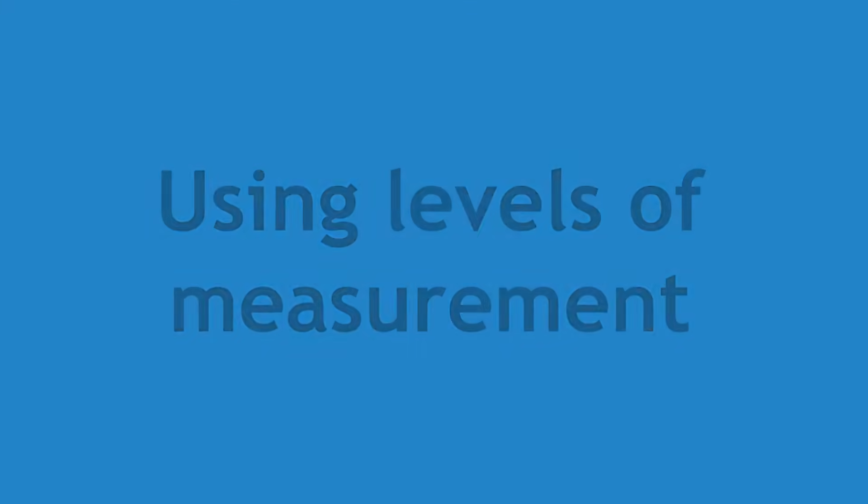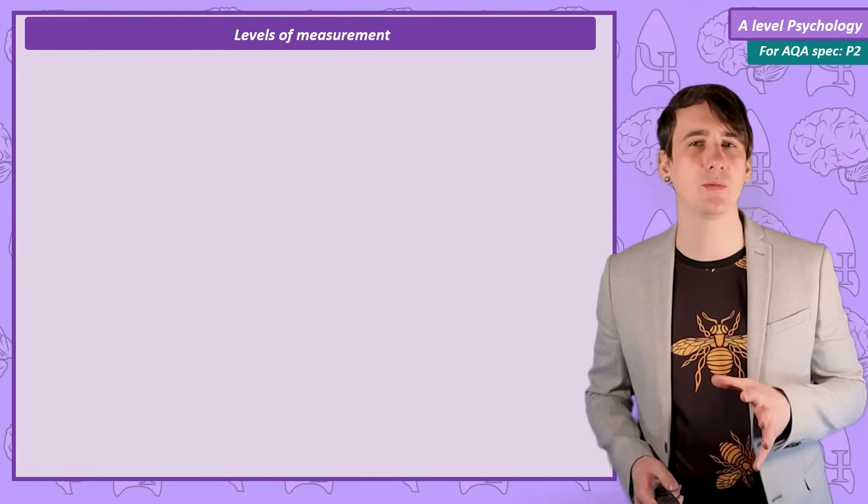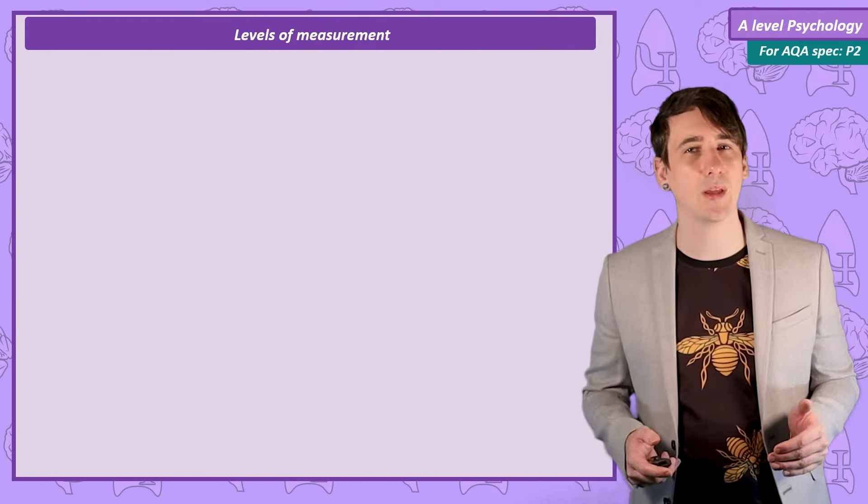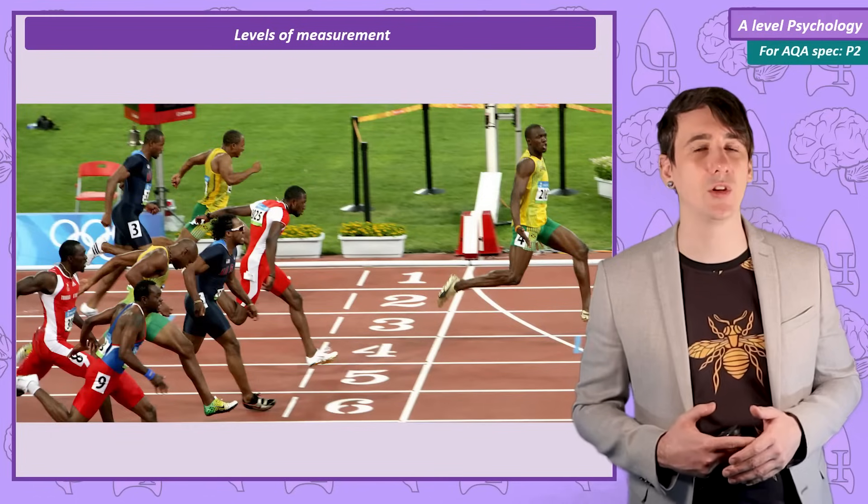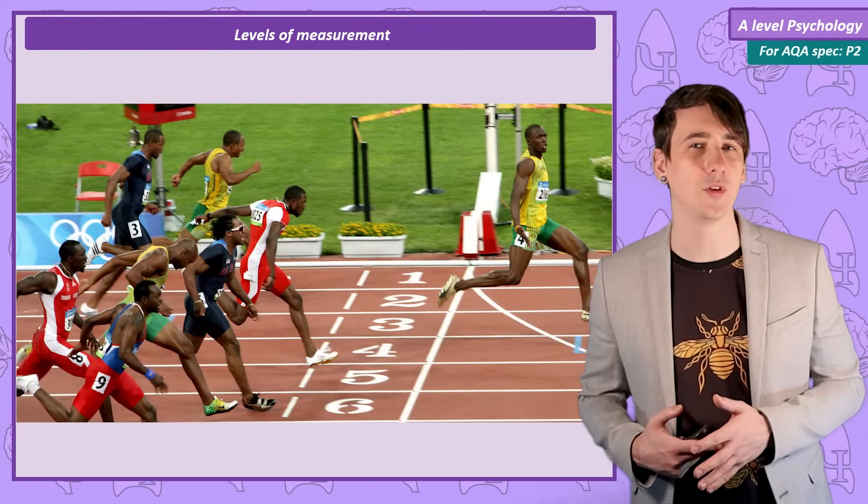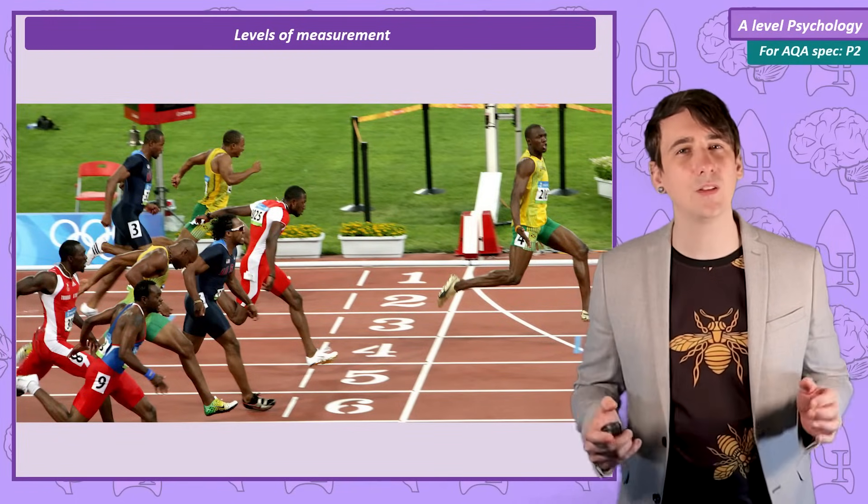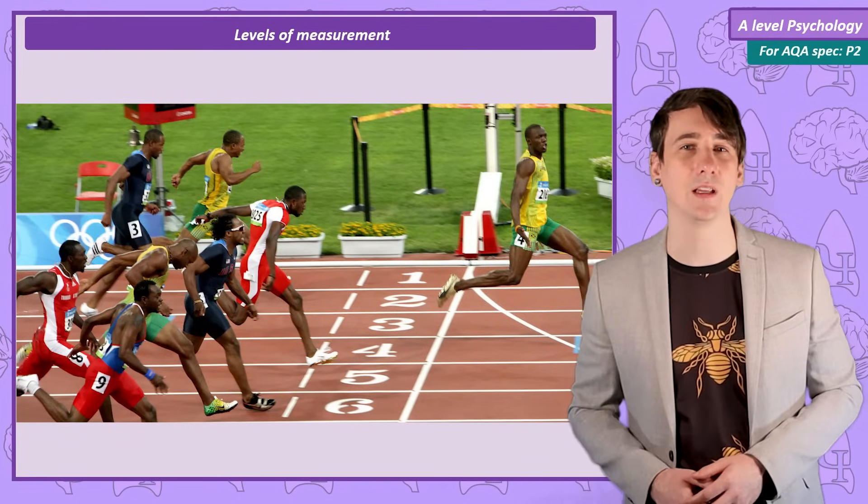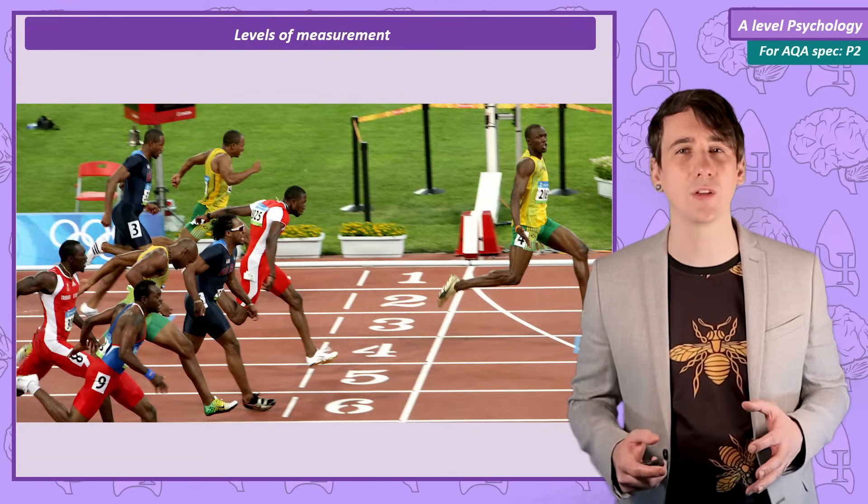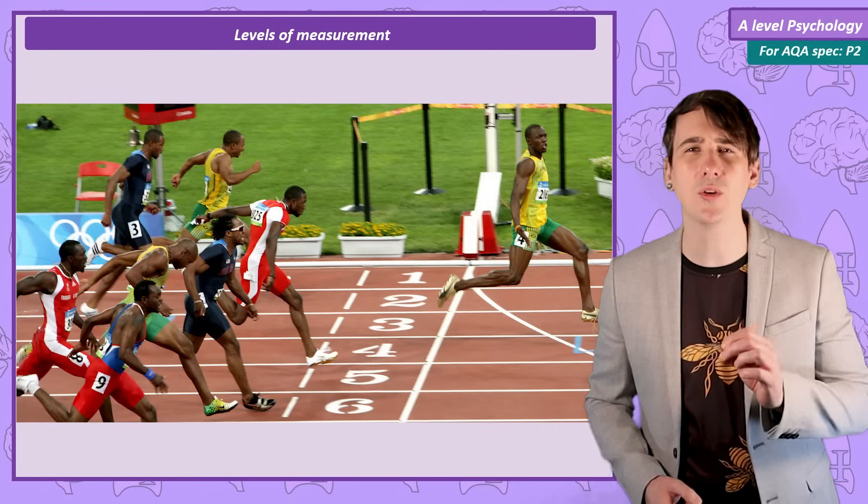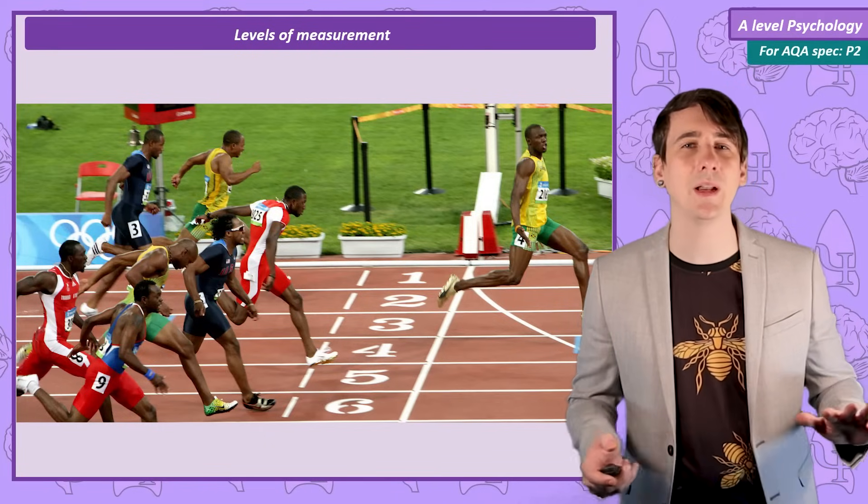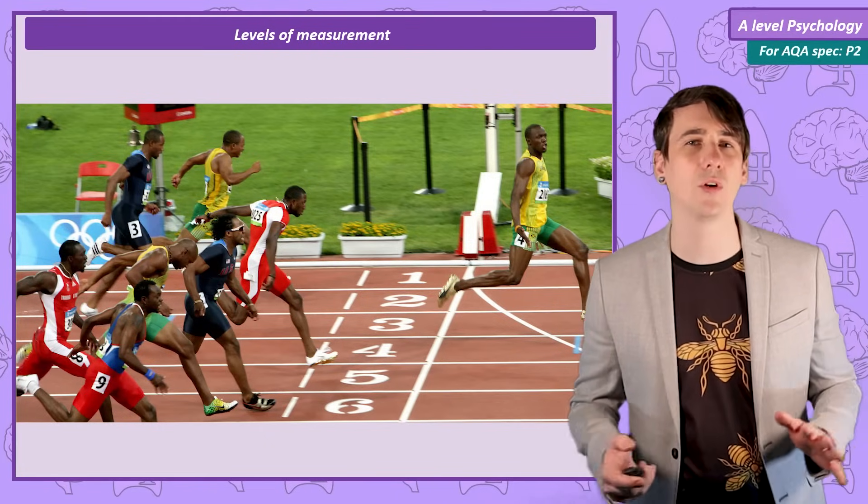Using levels of measurement. To talk about the difference between levels of measurement, particularly in the level of detail we get from each of these levels of measurement, I like to talk about this image of the 2008 Olympics 100 metre race. This is the most amazing race I have ever seen. It includes the greatest runners in the world at this time. Usain Bolt is so good, he just absolutely dominates everyone while looking like he is going for a run in the park.